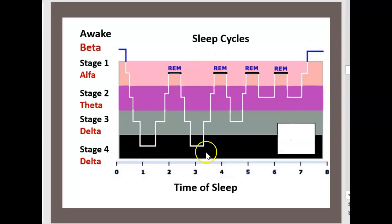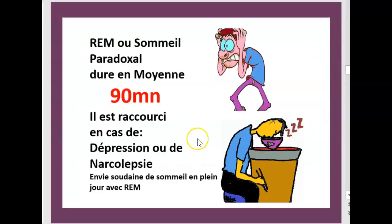In the first part of the night, there is less REM than in the second part of the night. As the night progresses, REM becomes longer. The duration of a REM sleep cycle is about 90 minutes — one hour and a half. REM sleep is shortened in depression and narcolepsy.